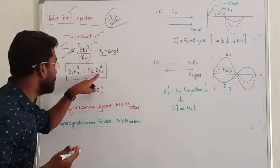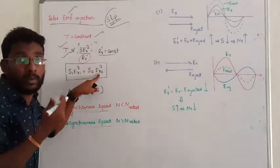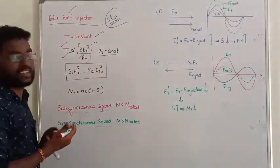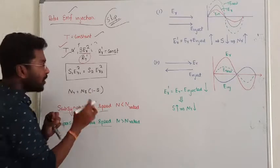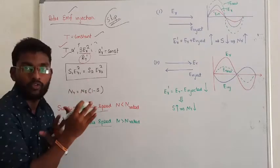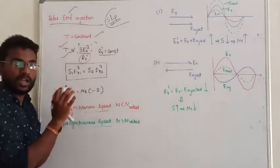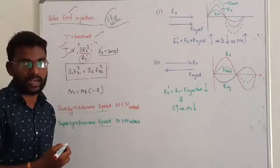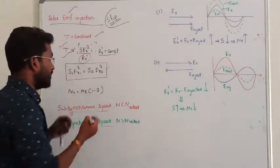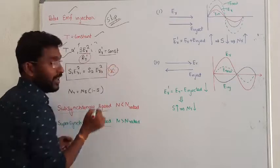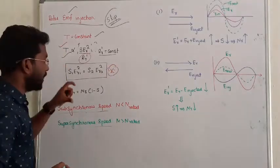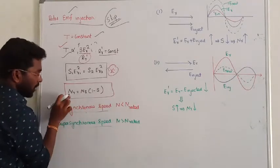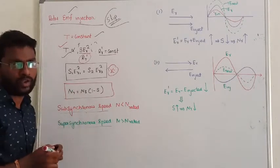In case two, you can vary the slip and EMF values — slip value and EMF value might be different between the two cases. The key relation to fix in your mind is that the product of slip and rotor EMF must remain constant. This is the general relationship between rotor EMF and slip of the machine. This is very important for solving problems.